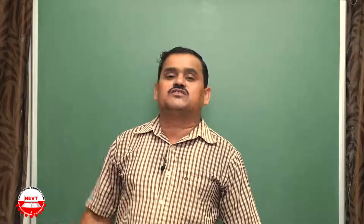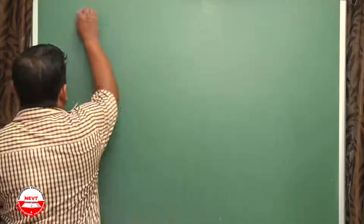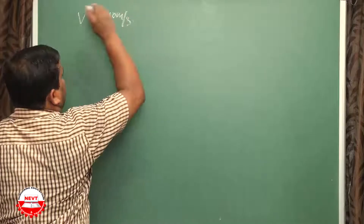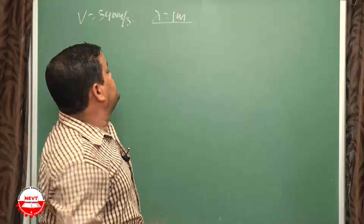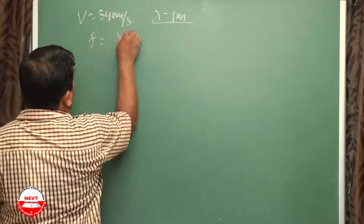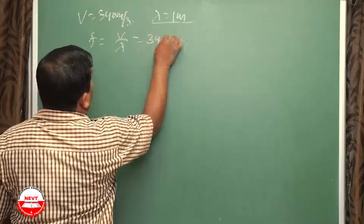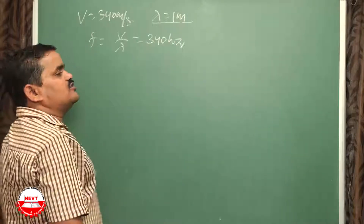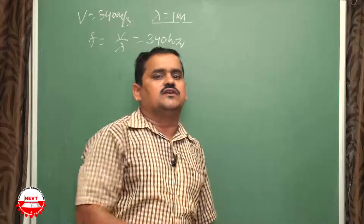First question: what is reverberation and how is it reduced? Reverberation is when a sound produced in a closed room persists and remains audible. It is reduced by using sound-absorbing materials, curtains, false ceiling, or making the plaster rough. Next bit: if velocity of sound in air is 340 m/s and wavelength is 1 m, will it be audible? F = V/λ = 340/1 = 340 Hz. Since 340 Hz is between 20 Hz and 20,000 Hz, it is audible.